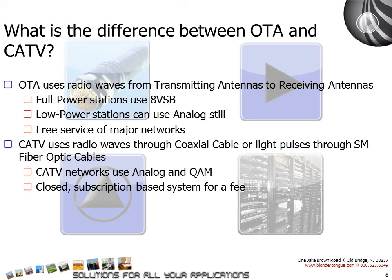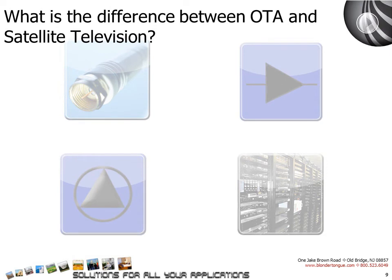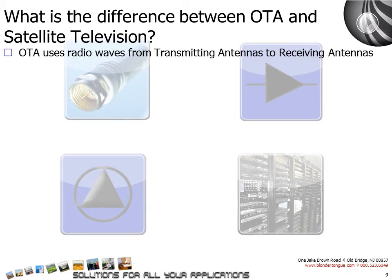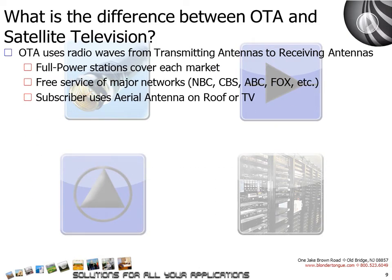What is the difference between over the air and satellite television? Over the air television, also known as terrestrial television, uses a network of transmission towers to relay the signal. The full power television station covers each major market. It is a free service of the major networks such as NBC, CBS, ABC, Fox, etc. The subscriber uses only an aerial antenna on the roof or behind the television to pick up these signals.